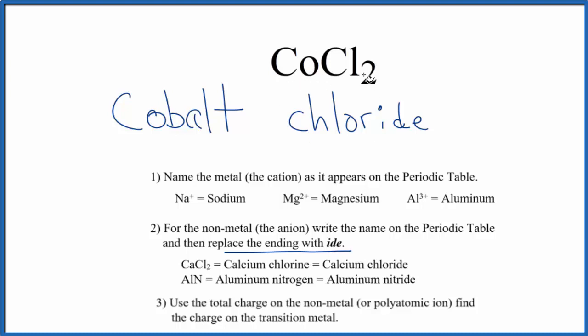The cobalt atom is bonded to two chlorine atoms. Chlorine has an ionic charge of 1-, so each chlorine is 1-. Two times 1- equals 2-. The cobalt must be 2+ for the total charge to add up to zero.